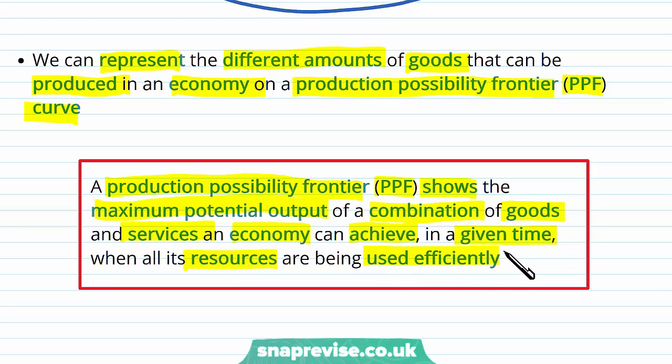So what does efficiency mean here? It's a state in which the economy is making optimal decisions so that maximization of production is achieved. In effect, efficiency almost translates to the economy doing as best as it can.